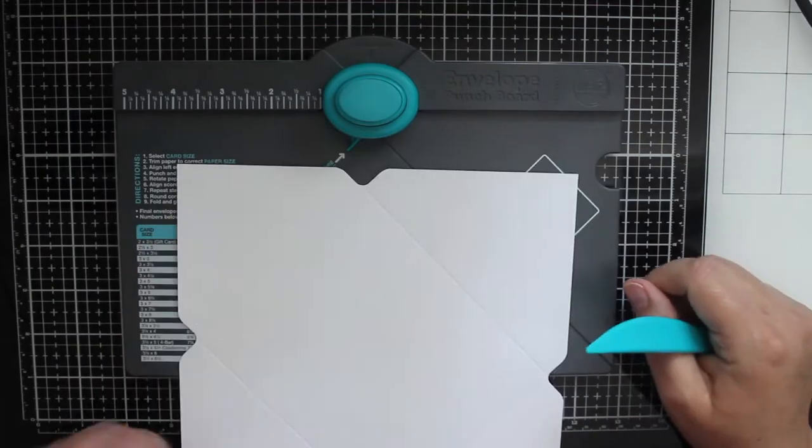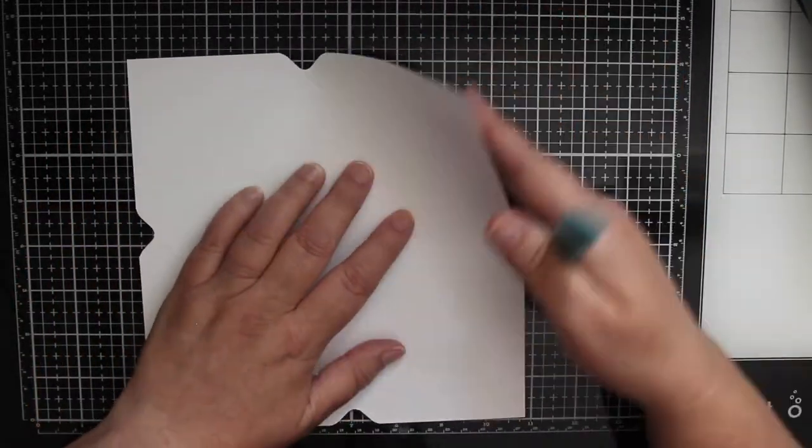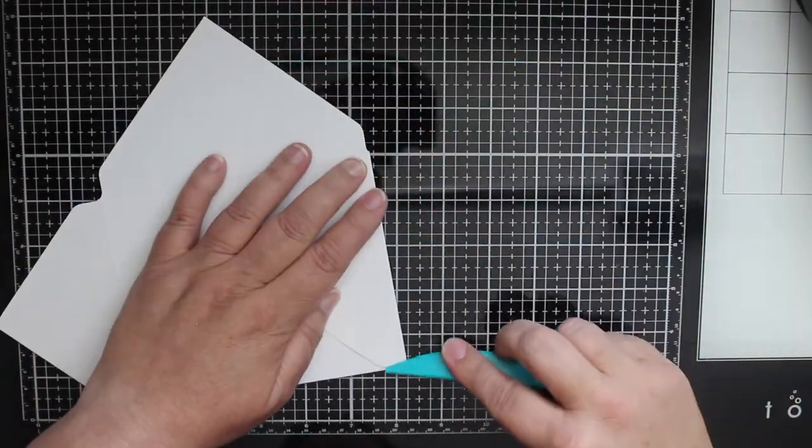I should have done this for the first score line but I forgot. When I'm done I'll turn the paper over and fold and burnish each score line with my bone folder.